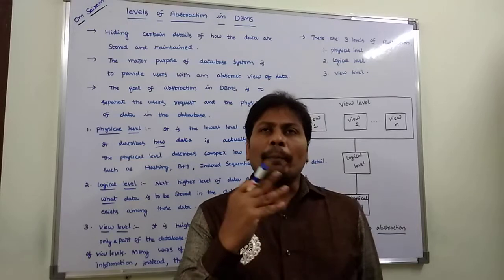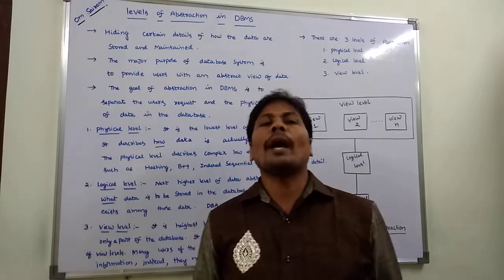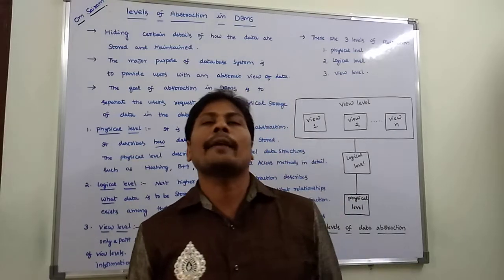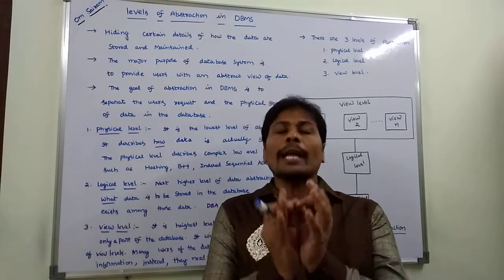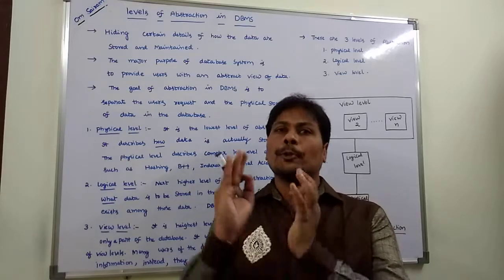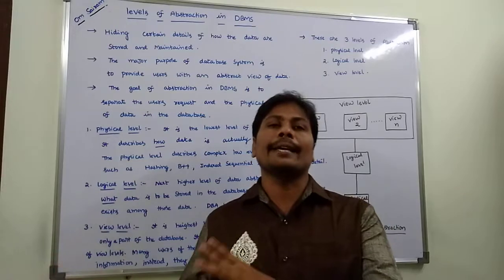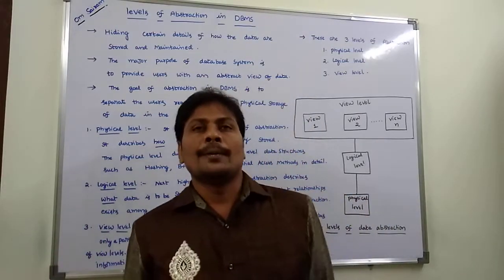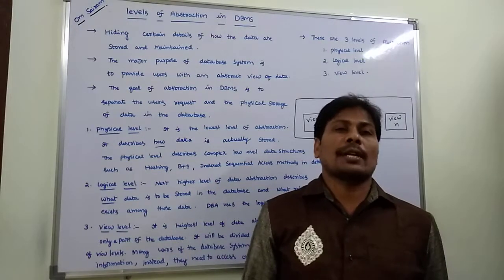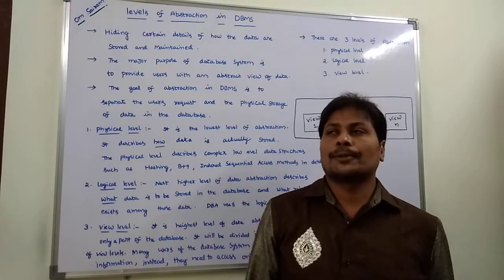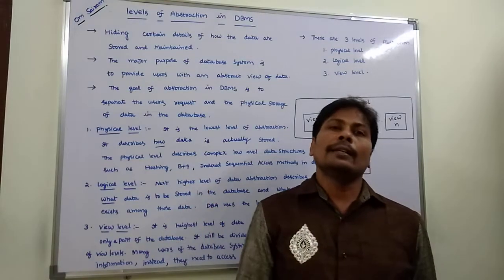The main purpose of a database system is to provide users with an abstract view of data. Only the outline of the data is shown, but the internal details of the data are not viewed. That is the essence of levels of abstraction in DBMS, and it is one of the most important topics in database management.